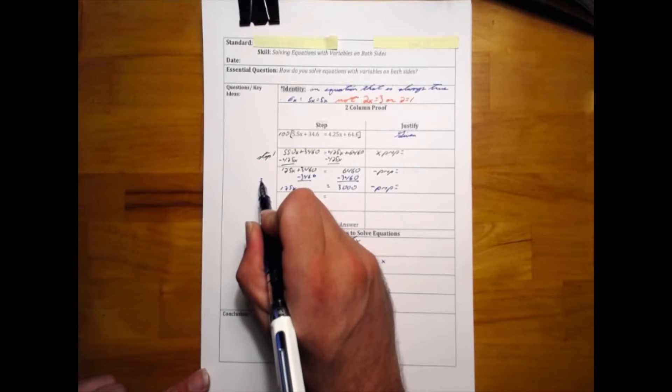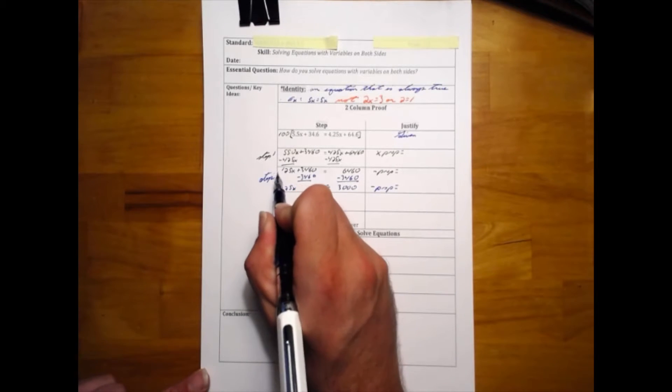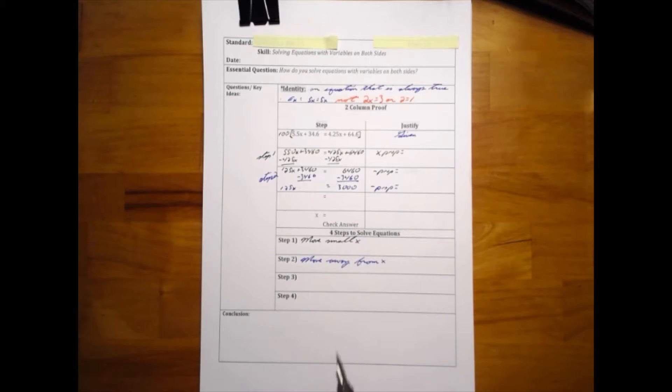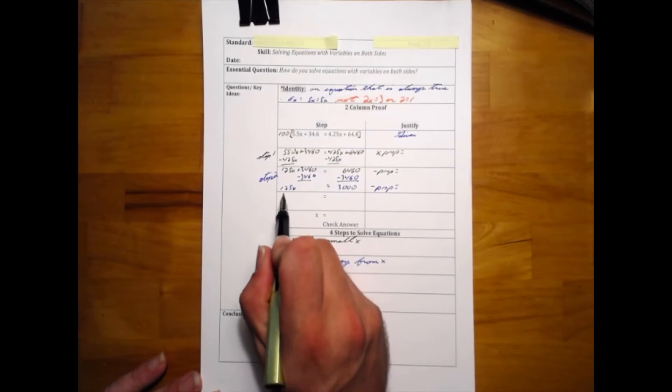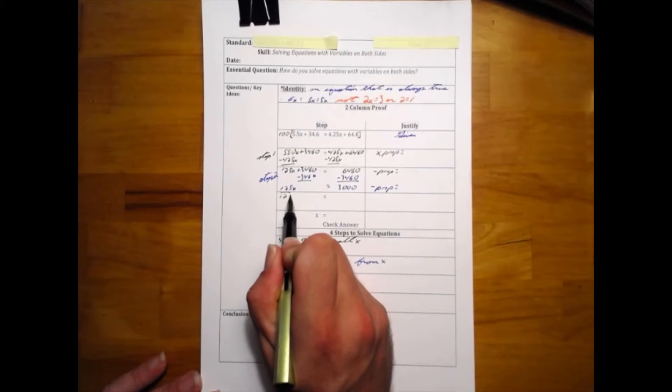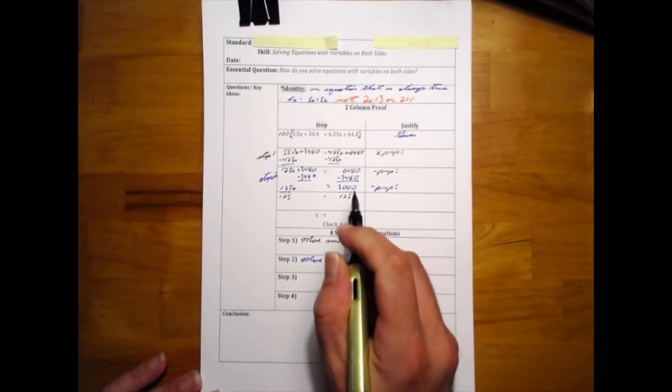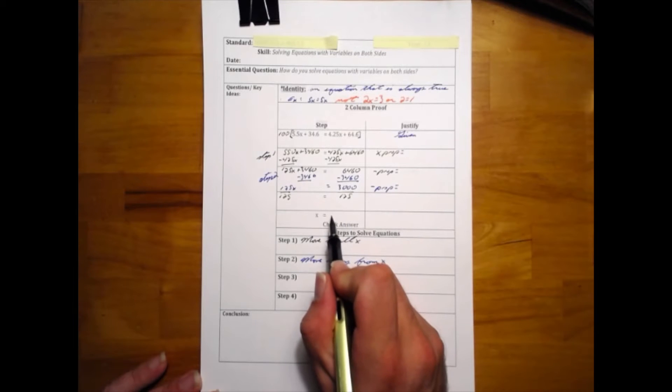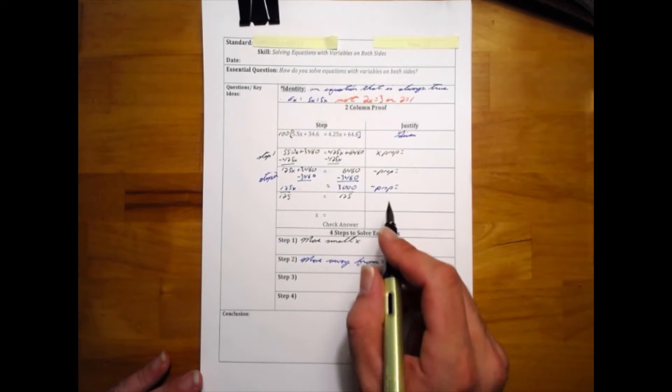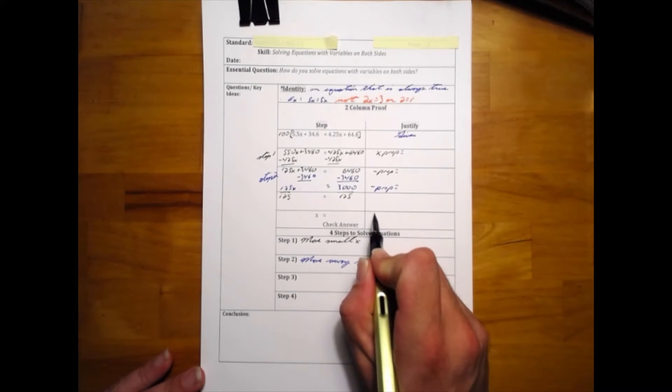Now that we have 125x equals 3000, we're going to divide both sides by 125. This is an inverse property of multiplication—where we had 125 times x—so we're using the division property of equality.